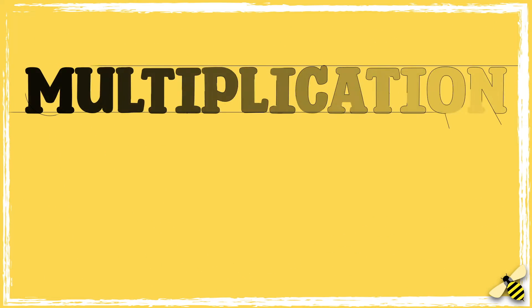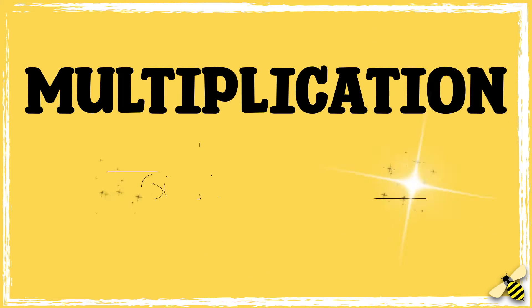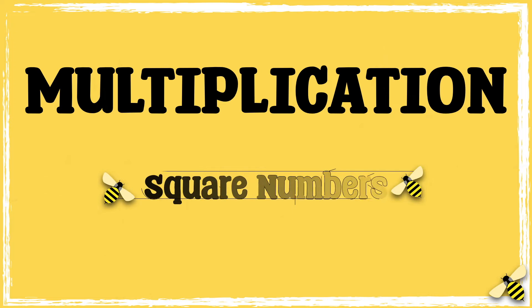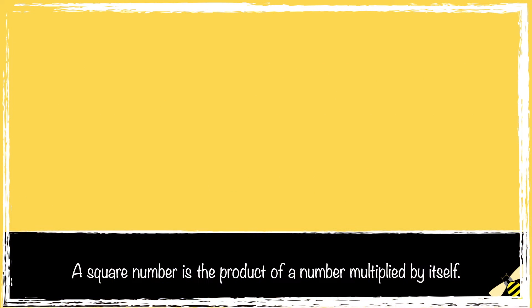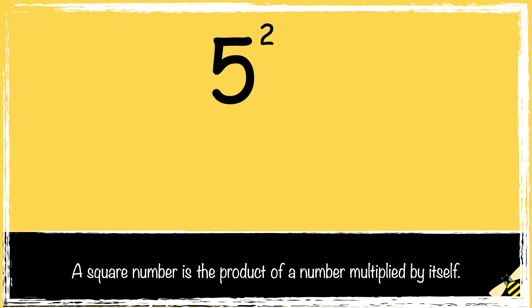In this video, we're going to learn how to square numbers. A squared number is the product of a number that's multiplied by itself.